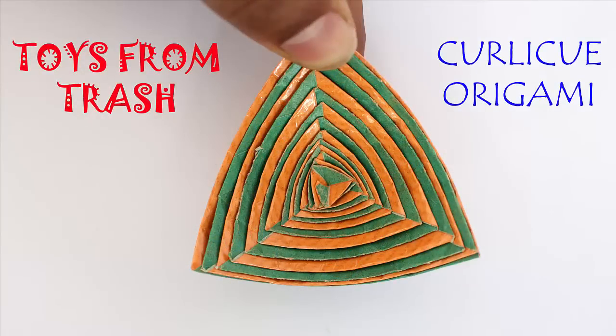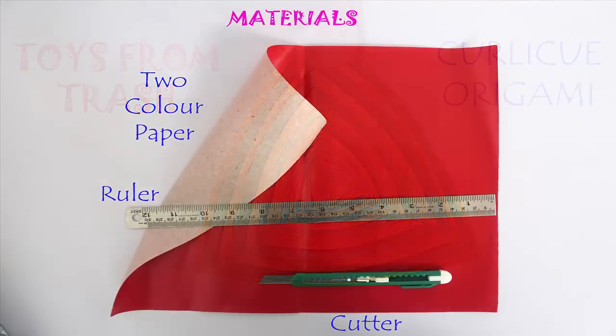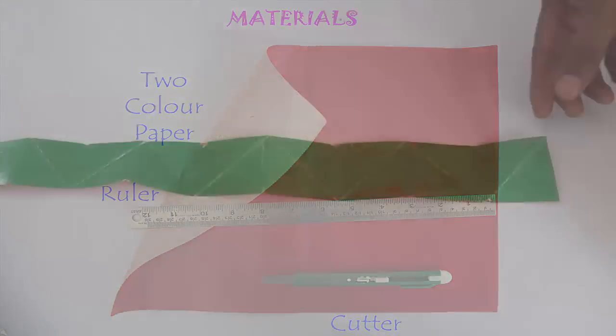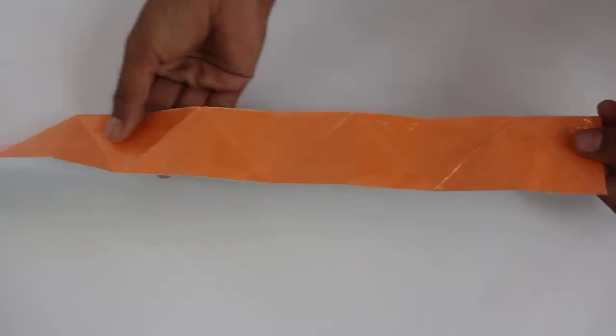By folding a strip you can make a beautiful multicolored bowl. For this you will need two-sided colored paper, a scale, and a cutter.